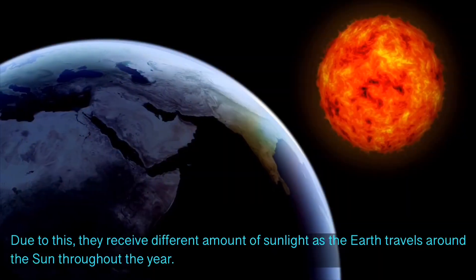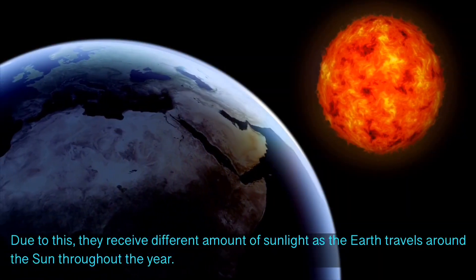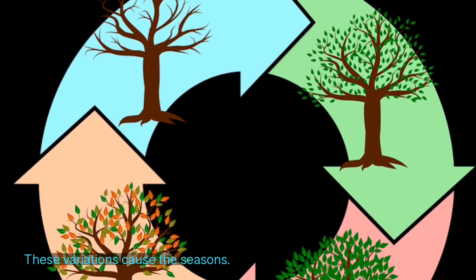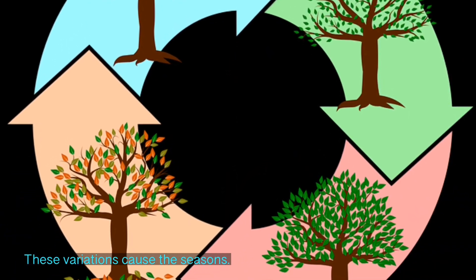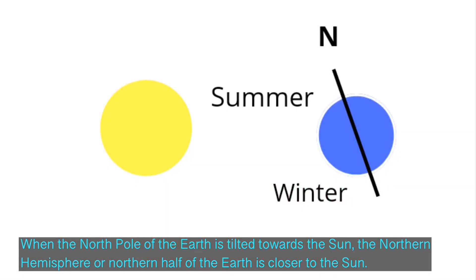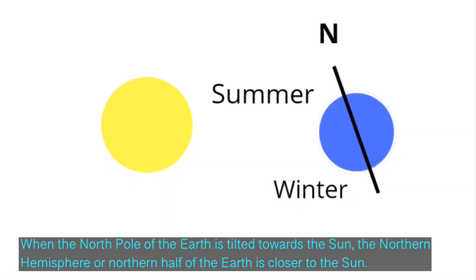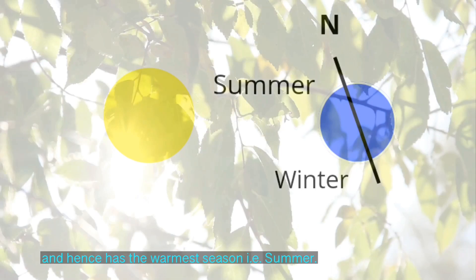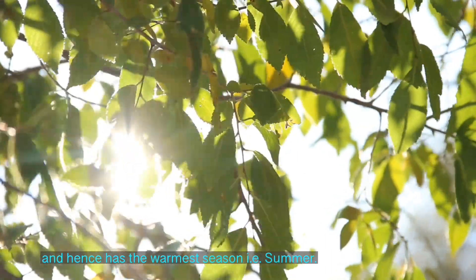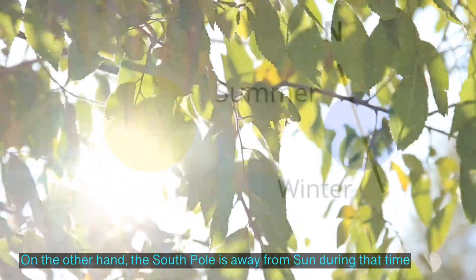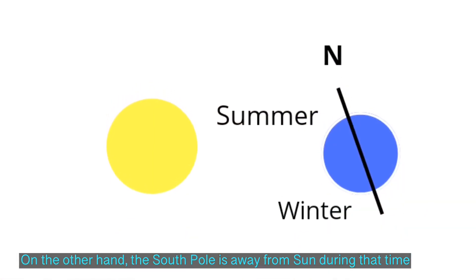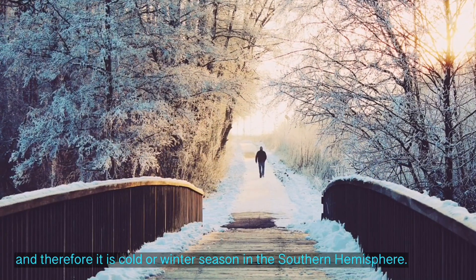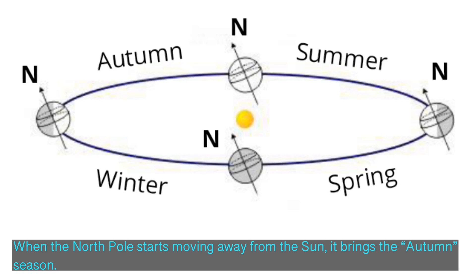Because of this tilt, different parts of the world are closer to the Sun at different times of the year. Due to this, they receive different amounts of sunlight as the Earth travels around the Sun throughout the year, and these variations cause the seasons. When the North Pole is tilted towards the Sun, the northern hemisphere is closer to the Sun and has the warmest season — that is, summer. On the other hand, the South Pole is away from the Sun during that time, and therefore it is cold, or winter season, in the southern hemisphere.